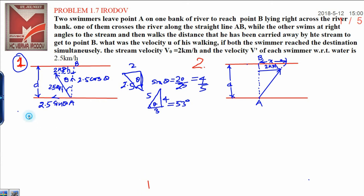Now in order to cross the stream, time t1 will be: d is the width of the river divided by the velocity which will be used to cross the line AB, that is 2.5 cos θ. I can write 2.5 over here and cos θ from the triangle is 3 by 5.